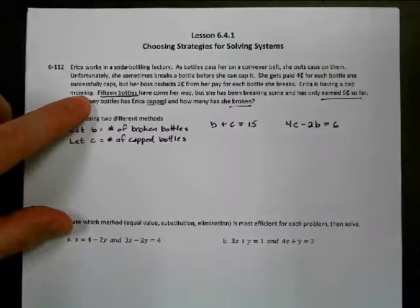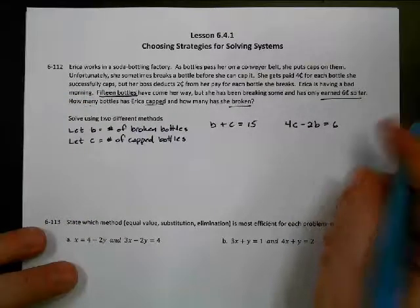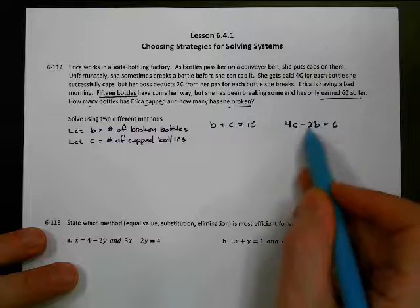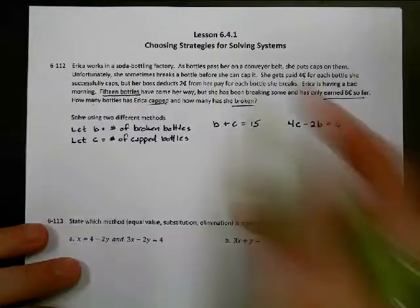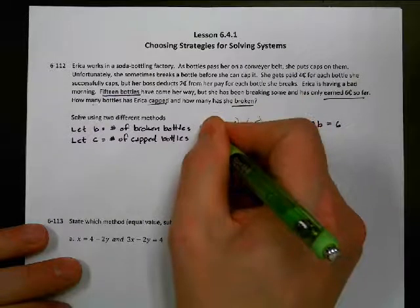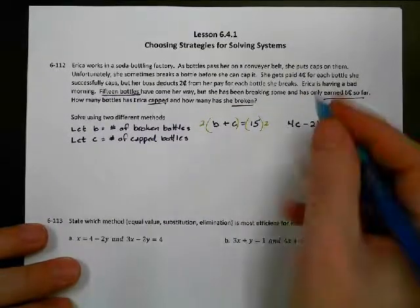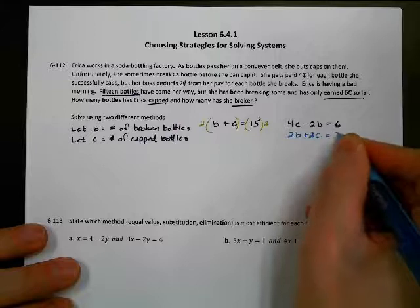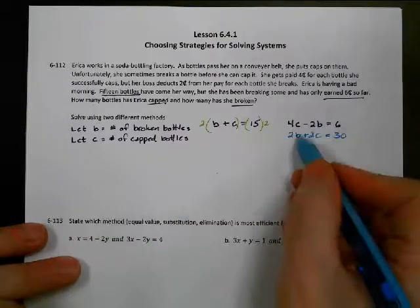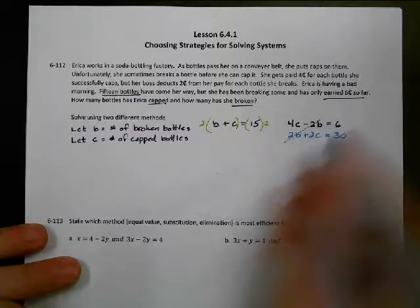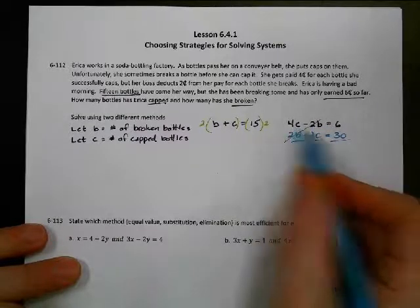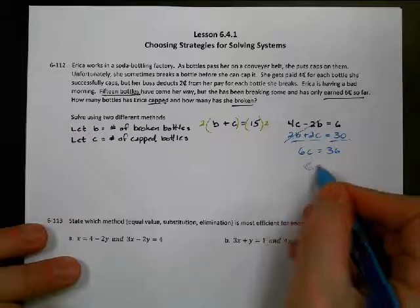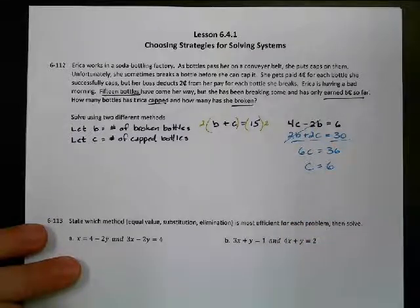Worry about the decimals and all that. So noticing these two, I do have a positive B and a negative B here. But this is being multiplied by two. So let's go ahead and multiply everything over here by two. So I've got 2B plus 2C equals 30. All right. So my Bs, those two are canceling each other out. And then I've got 4C plus 2C, that's 6C, equals 36. So it looks like she's going to cap six of them. Oh, she broke a bunch.